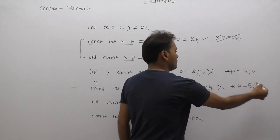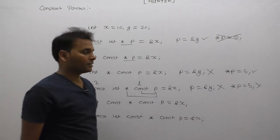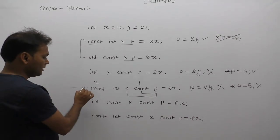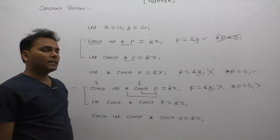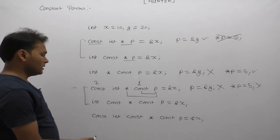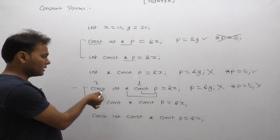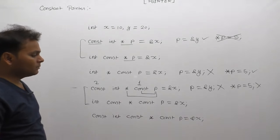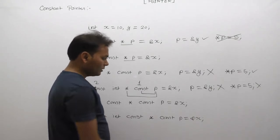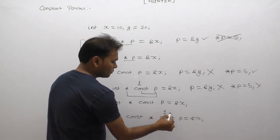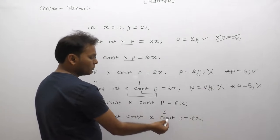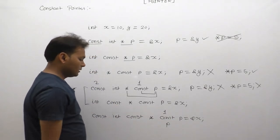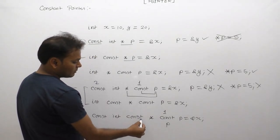In that case, star p is a constant location and p is also a constant location — both operations are invalid. Moving to the next case, cases three and two have the same meaning with no difference. The only difference is in this particular case when const is applied before the data type. The last case is an invalid case.